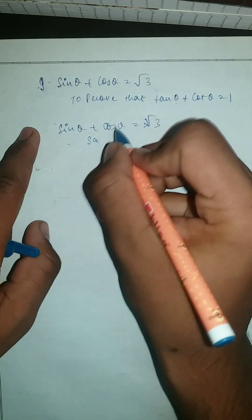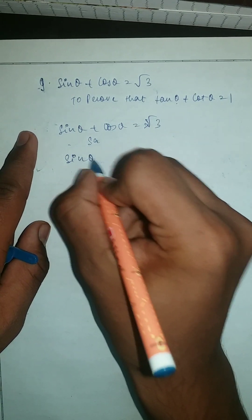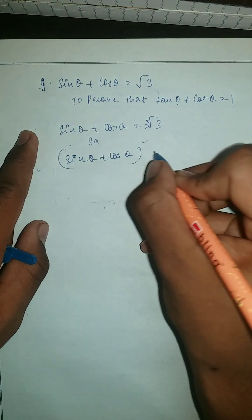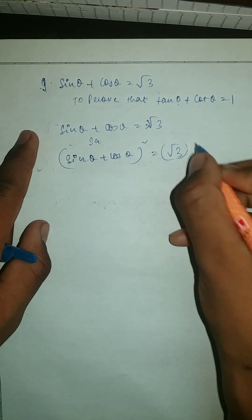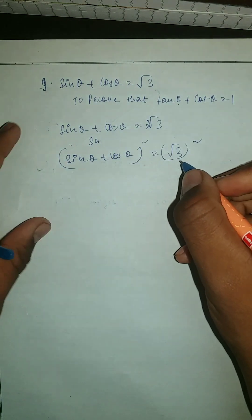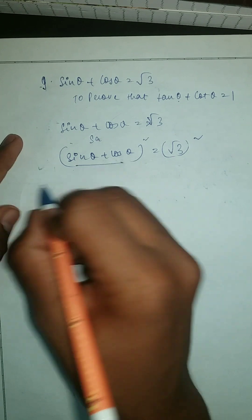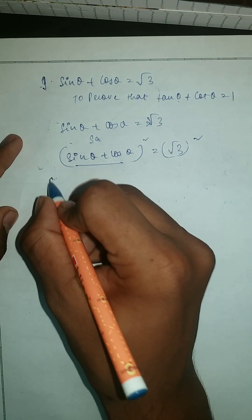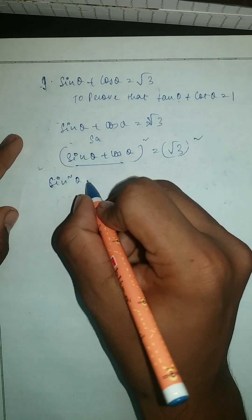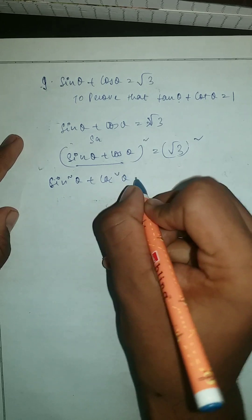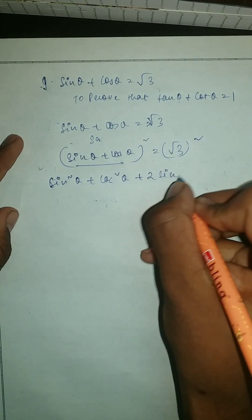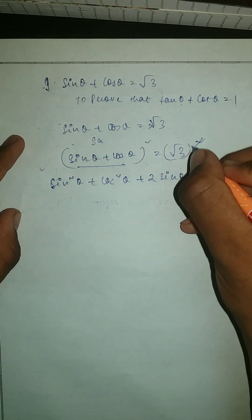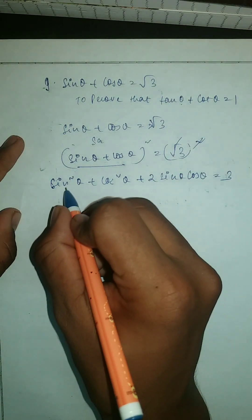Now we're going to square them. So it should be sine theta plus cos theta, whole square, is equal to root 3 whole square. By doing this, we can write this as sine squared theta plus cos squared theta plus 2 sine theta cos theta is equal to 3.